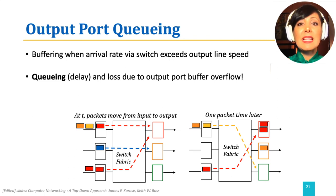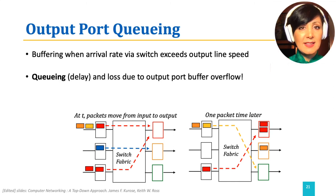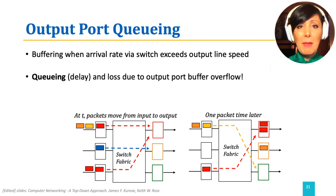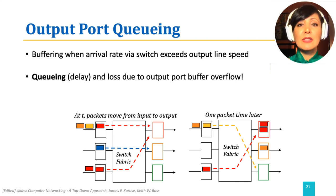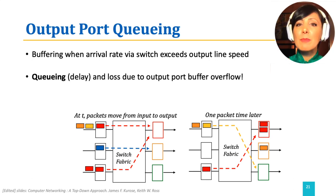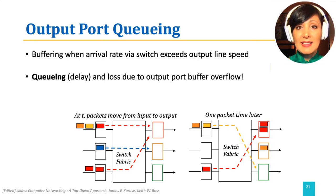Datagrams in the output port queues can experience delay and can also be dropped. The decisions to drop packets are made by active queue management policies. The explicit congestion notification (ECN) marking that we previously discussed can also happen at the router output port queues. How to send out the packets from the output port queue on the output line is decided by the scheduling discipline at the output port.